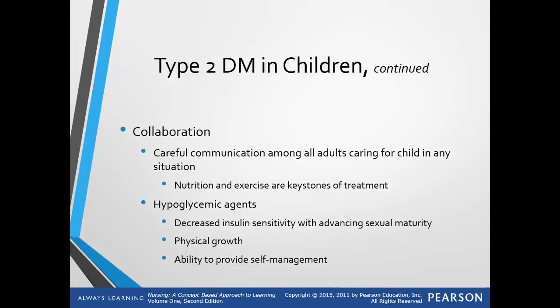Diet and exercise is effective in less than 10% of kids with type 2 diabetes, so an oral medication is usually required. Metformin, also known as Glucophage, has been approved for use in kids as an adjunct to diet and exercise. Metformin needs at least 4 weeks to take effect, so many will use insulin for a short time while waiting for the metformin to kick in.